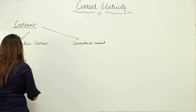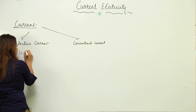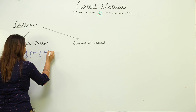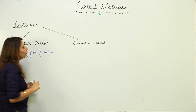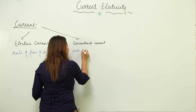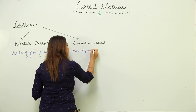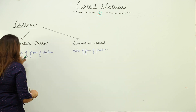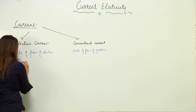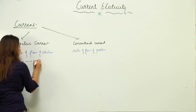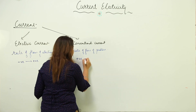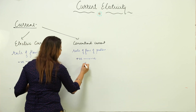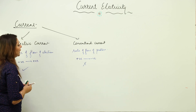So what is the difference between the two? Electric current is the rate of flow of electrons — in it, electrons actually flow. Conventional current is the rate of flow of protons. Electric current flows from a negative terminal to a positive terminal, whereas conventional current flows from a positive terminal to a negative terminal.